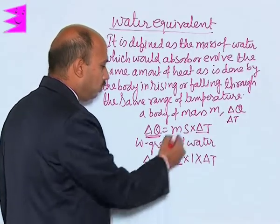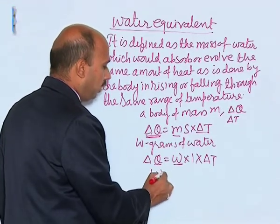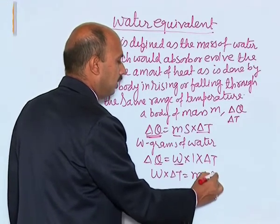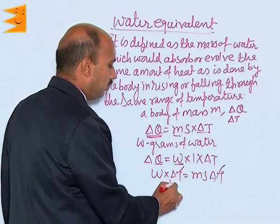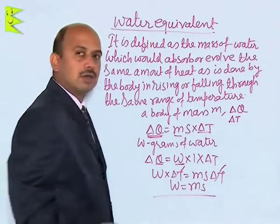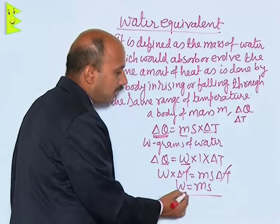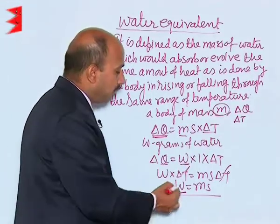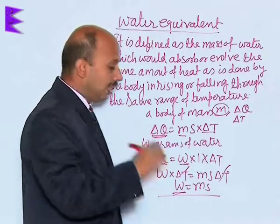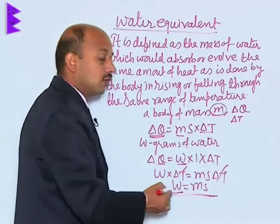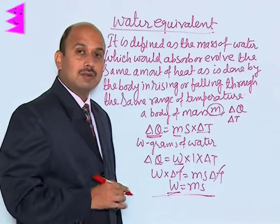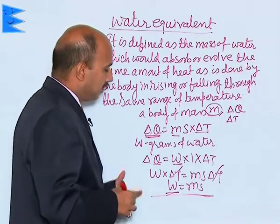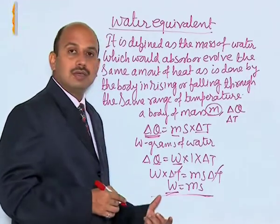If you equate these two, you will get W into delta T is equal to M S delta T. Delta T will get cancelled, so W is equal to M S. This W is the water equivalent of the body of mass M. W is measured in grams, but numerically it is equal to thermal capacity. However, thermal capacity is measured in joule per Kelvin or per degree Celsius, whereas water equivalent is measured in grams.